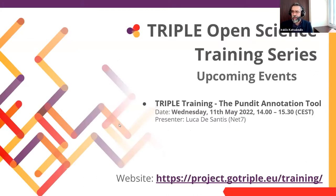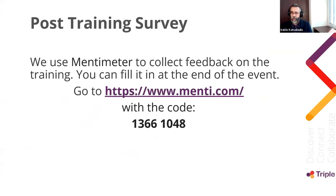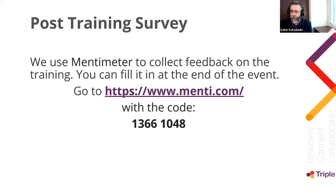As I said at the beginning, this is a webinar of a training series. The next event is the Bullet Annotation Tool, on the 11th of May — Wednesday, at 2pm Central European Time. At the end of the event, please fill in the post-training survey in Mentimeter. You can note the address and code now, and it will also appear in the chat at the end.